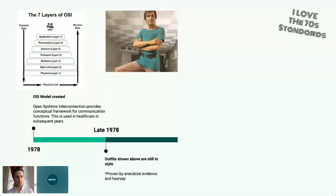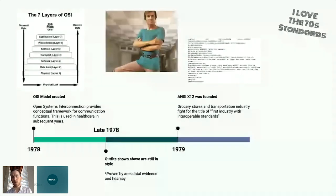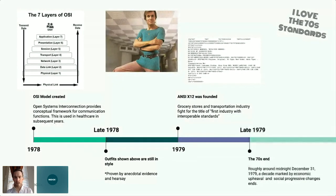Later in 1978 — cool outfits — and in 1979, ANSI X12 was founded. They started to work on standards. Grocery stores and transportation dove in first into uniform standards. If you think about the UPC code, that's a standard — a standard way of communicating information electronically. Late 1979, roughly midnight of December 31st, the 70s end and we move on.